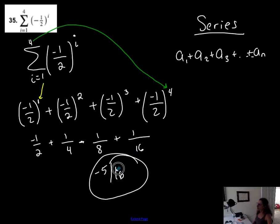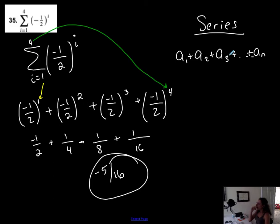This represents the sum of the first four terms in this particular series, which is the sum of the first four terms from a sequence. There was a point made in the comments that this variable i might confuse some people as complex numbers.